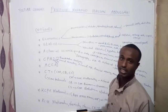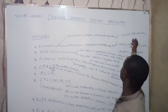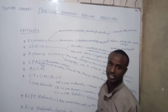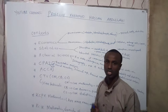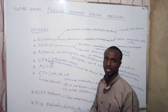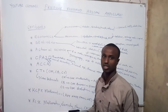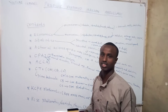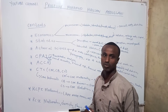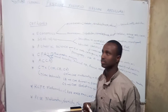Microeconomics majorly deals with demand and supply, elasticities, the firm, the household, and the market, whereby we have three-sector models and four-sector models, whereby we are going to involve the government.